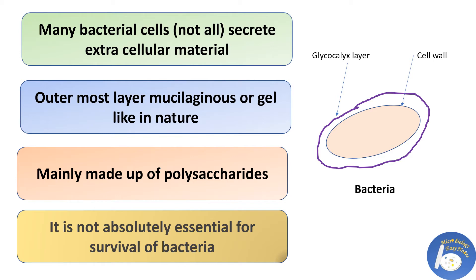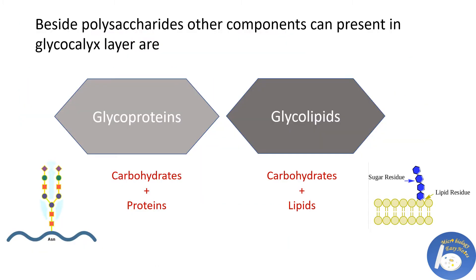This layer may be present or absent in bacteria, so it is not really essential for survival of the cell. Beside polysaccharides, other components can be present in the glycocalyx layer, which can be glycoproteins — a combination of carbohydrates and proteins — or glycolipids, which are a combination of carbohydrates and lipids.